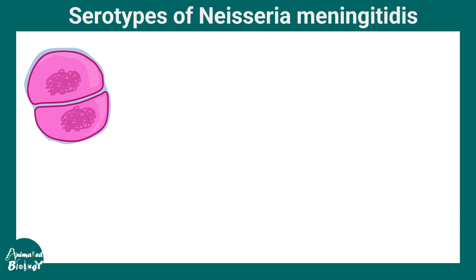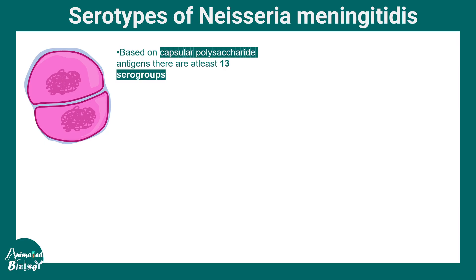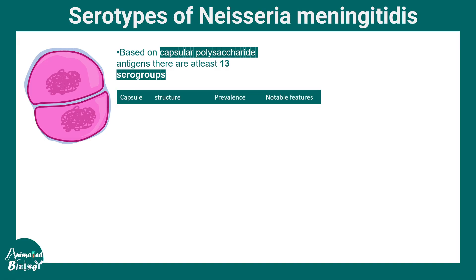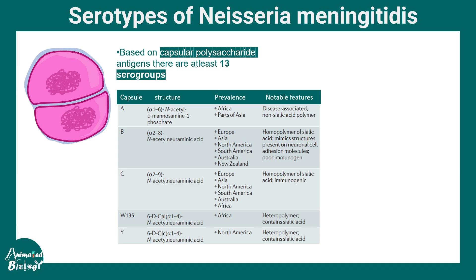Let's talk about the serotypes of Neisseria meningitidis. Based on the capsular polysaccharides, there are at least 13 serogroups. The most relevant ones are serogroups A, B, C, W-135, and Y. These have different prevalence in different parts of the world and their structures differ somewhat from each other.